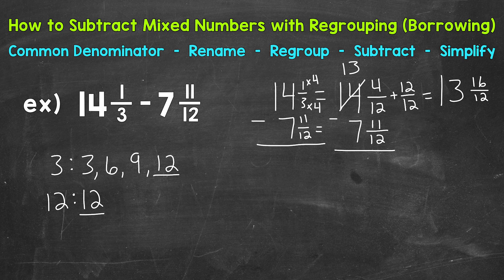Now as far as the 7 and 11/12, we can just bring that over as is. It already has that common denominator of 12. There's no need to regroup or borrow or do anything else with the 7 and 11/12. So again, we're just bringing it over and lining everything up. And now we are ready to subtract.